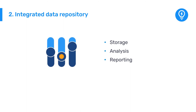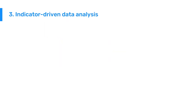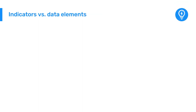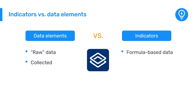The last principle we will discuss is that DHIS2 supports indicator-driven data analysis and reporting. In DHIS2, we distinguish between data elements, which describe the raw data — for example, the counts being collected — and indicators, which are formula-based and describe calculated values such as coverage or incidence rates that are used for data analysis.